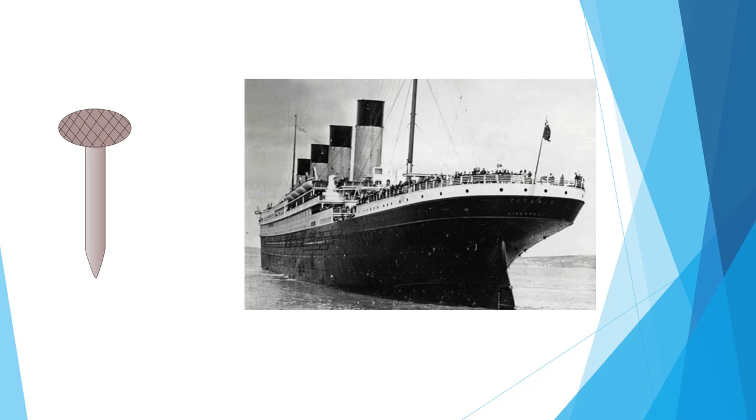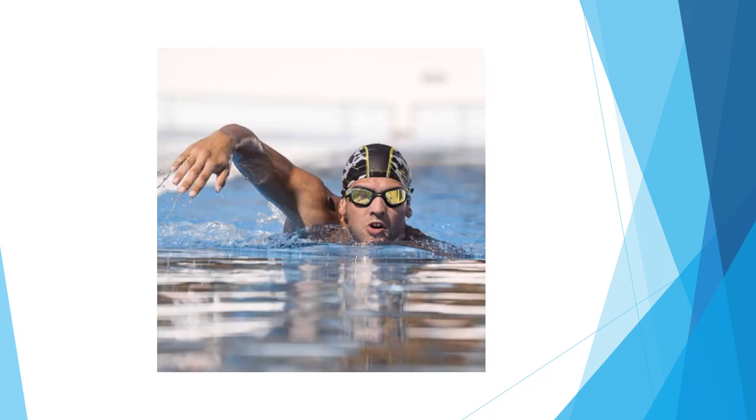An iron nail sinks in water. But why does the massive steel ship float on it? When an object is dipped in a liquid, a buoyant force acts on it and hence it appears that the weight of the object is reduced. It becomes easier to swim in sea water than in fresh water. This is because the density of sea water is higher than the density of fresh water due to salts dissolved in sea water.